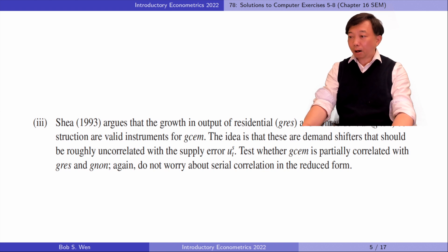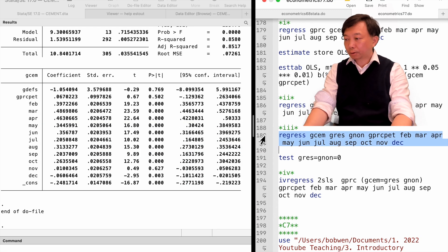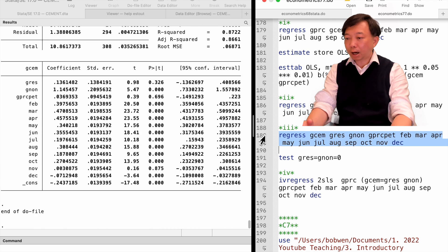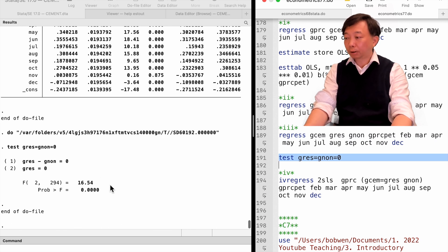In part 3, Shea argues that the growth in output of residential and non-residential construction are valid instruments for G-CEM. The idea is that these are demand shifters that should be roughly uncorrelated with the supply error. Test whether G-CEM is partially correlated with the two variables. Again, do not worry about serial correlation in the reduced form. We regress G-CEM on the two possible IVs and the other exogenous variables in the model. The F statistic for their significance is 16.54, which is higher than the rule of thumb of 10. They satisfy the instrument relevance requirement and can be used as valid IVs for G-CEM.